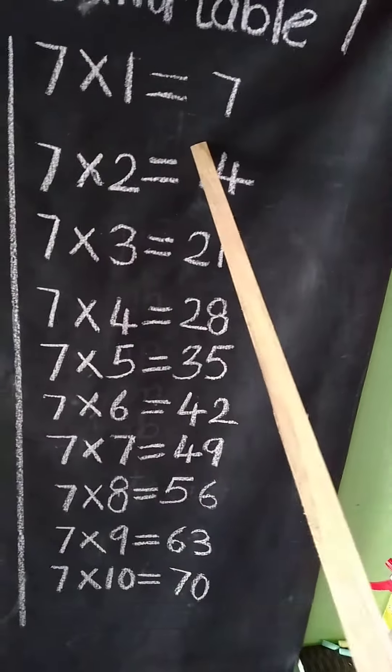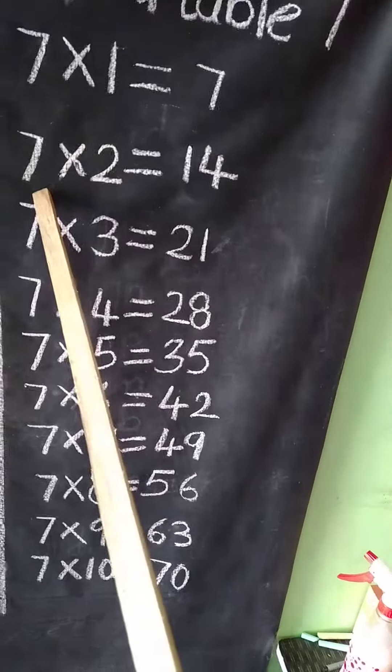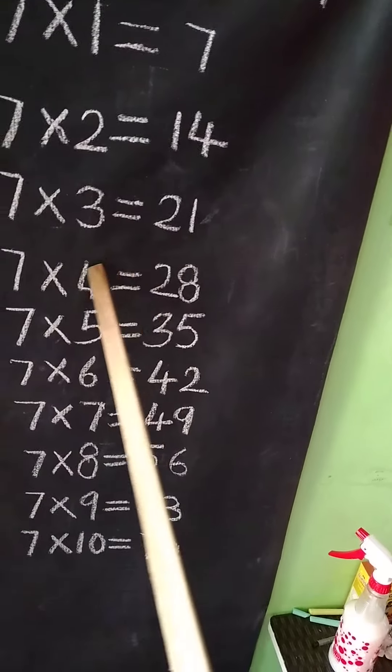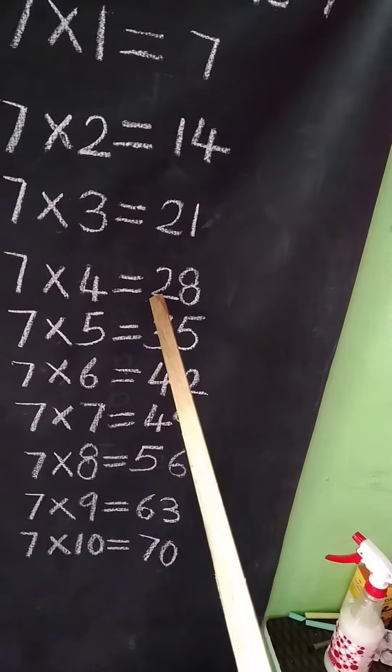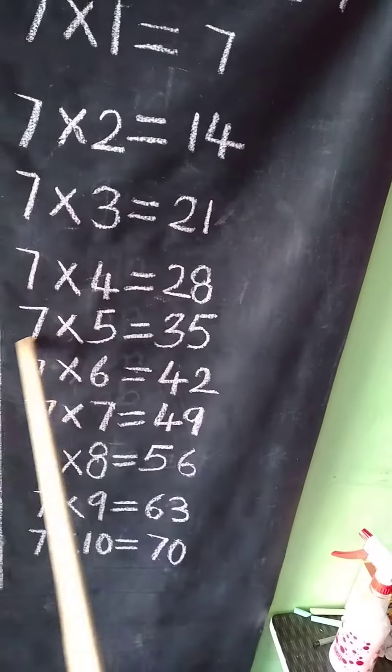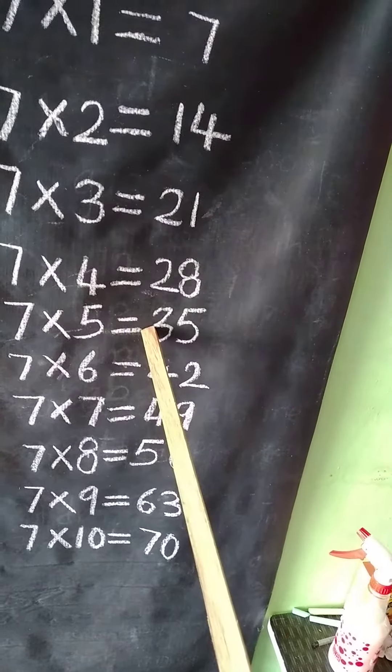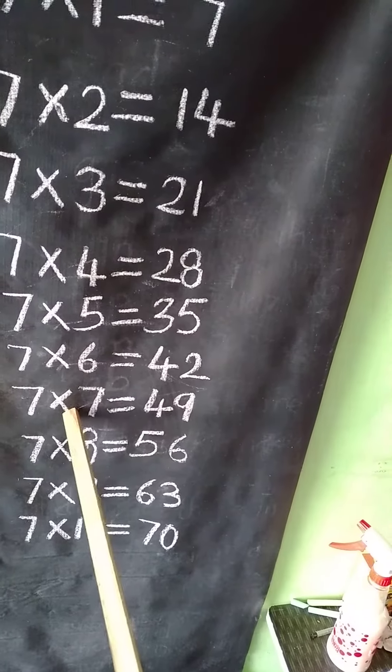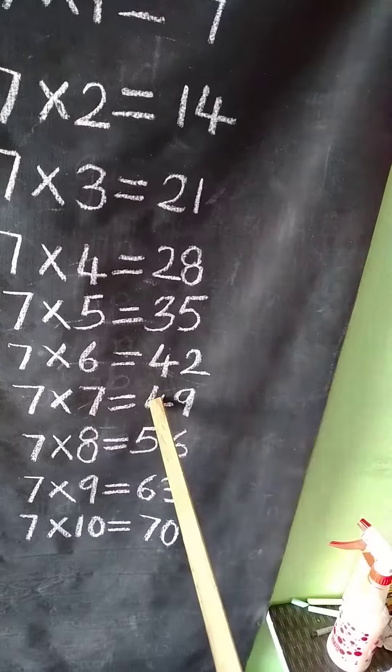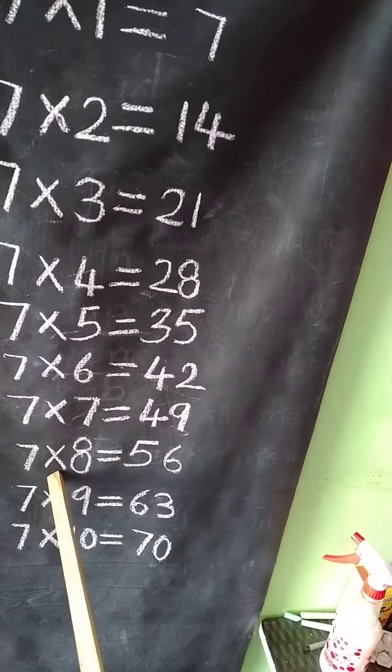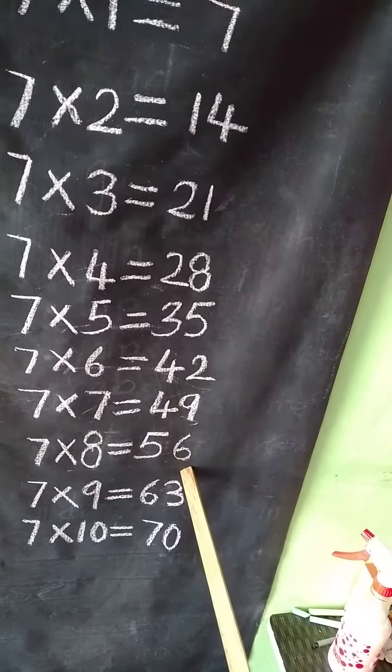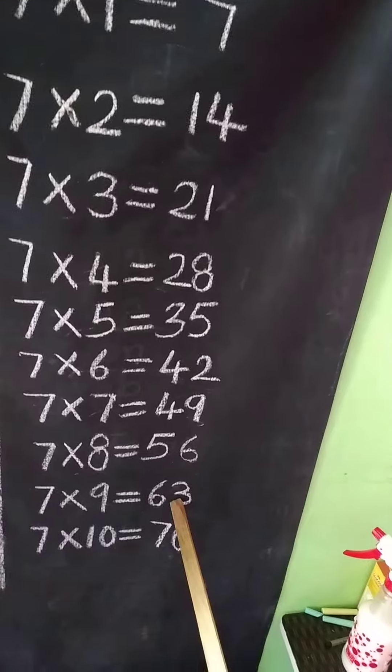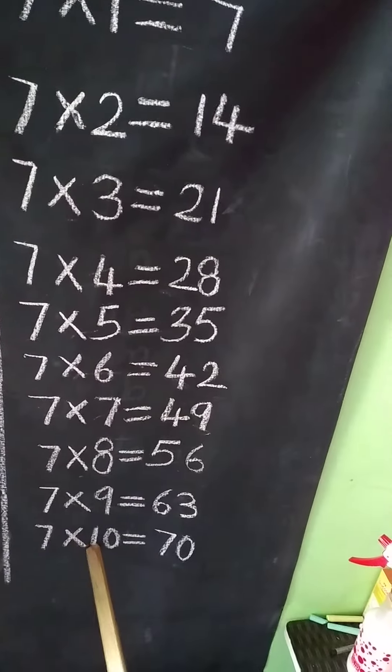Now table 7. 7 ones are 7. 7 twos are 14. 7 threes are 21. 7 fours are 28. 7 fives are 35. 7 sixes are 42. 7 sevens are 49. 7 eights are 56. 7 nines are 63. 7 tens are 70.